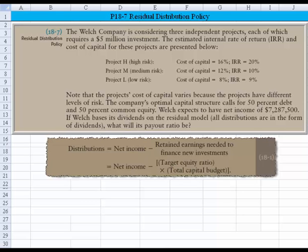If Welch bases its dividends on the residual model, which tells us that all distributions are in the form of dividends, what will its payout ratio be? I've put in the formula of how we would calculate the distributions if we are using the residual distribution policy. So now let me bring this problem to light.